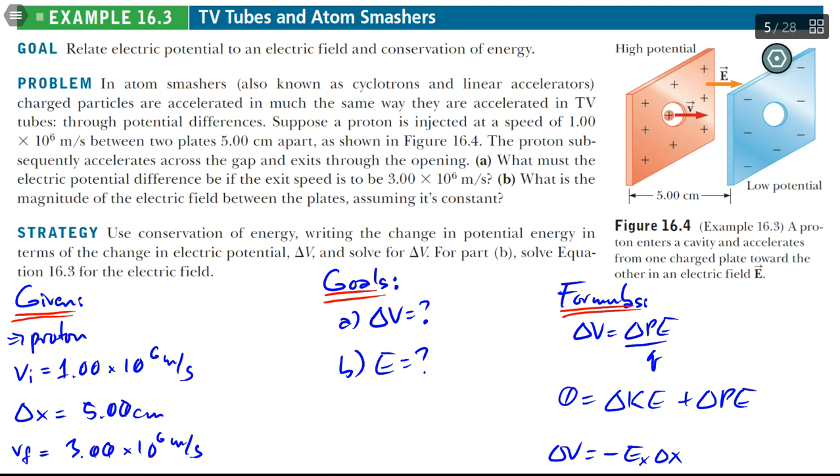We're given two plates, what I know as a linear accelerator, apparently called an atom smasher. It's used to accelerate charged particles, in this case a proton, that's important, at very high speeds. This initial speed of 1.6 times 10 to the 6th power meters per second, that's really fast.